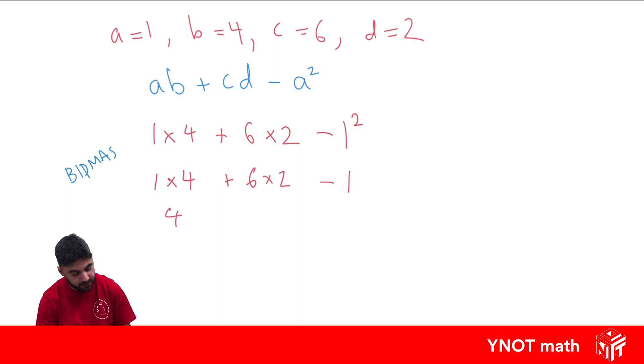So 1 times 4 is 4, plus 6 times 2 is 12, minus 1. Now we can just work left to right, because we just have addition and subtraction. So 4 plus 12 is 16, minus 1 gives us 15.